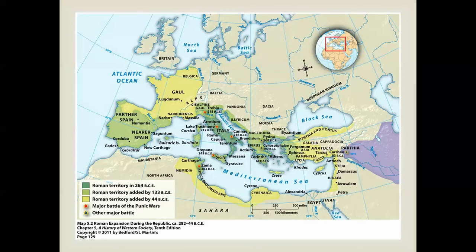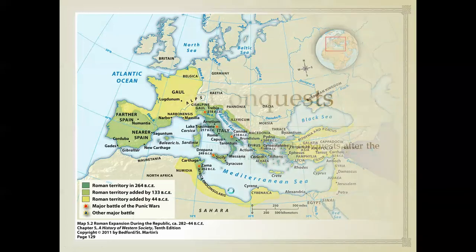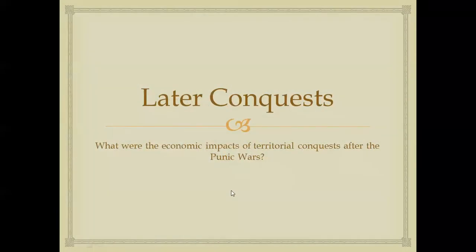By this point, the Romans had extended their rule quite significantly — not just the Italian peninsula, but northward, throughout Iberia or Spain, and into North Africa. This eventually leads to additional conquests. What were the economic impacts of territorial conquests after the Punic Wars?